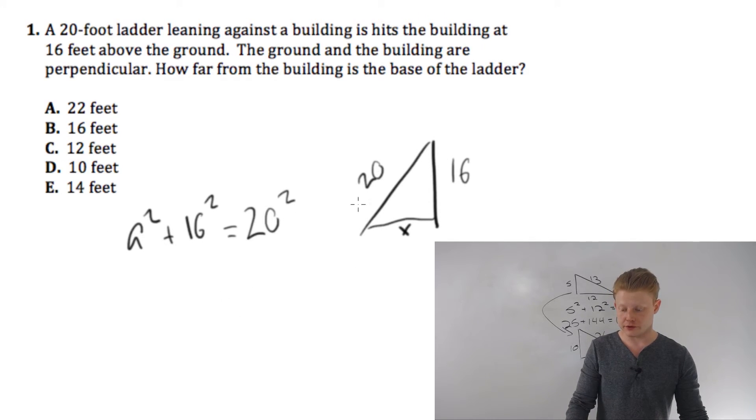Because if you recognize that this is a multiple of a 3-4-5—5 times 4 is 20, 4 times 4 is 16—well, then this would have to be 3 times 4, which is 12. So it's a time saver there.